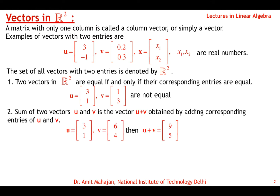The second property is vector addition. The sum U plus V is obtained by adding corresponding entries of U and V. For example, if U = [3, 1] and V = [6, 4] in R2, then U + V = [3+6, 1+4] = [9, 5]. So if you add two vectors in R2, their sum is again in R2.